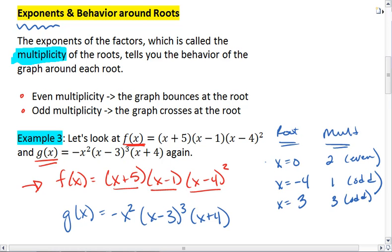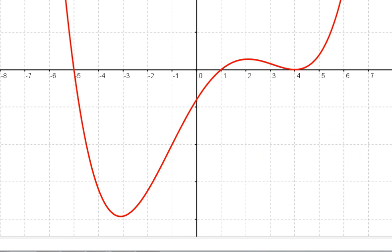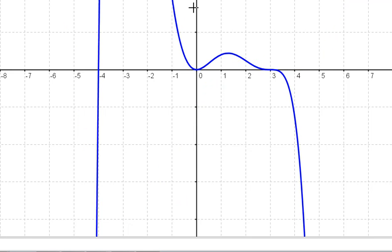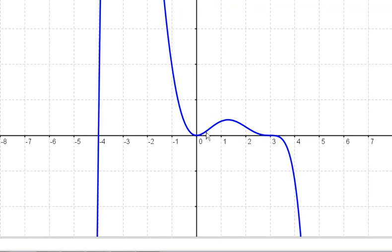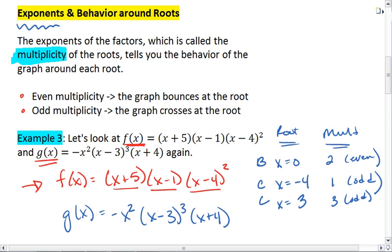So the only place we should be bouncing is at x equals 0, the other places we cross. And we do in fact see that at x equals 0, we bounce. But at x equals negative 4 and at x equals 3, we're crossing the x-axis. So we have an odd multiplicity, an even multiplicity, and an odd multiplicity. That is exponents and the behavior around roots.